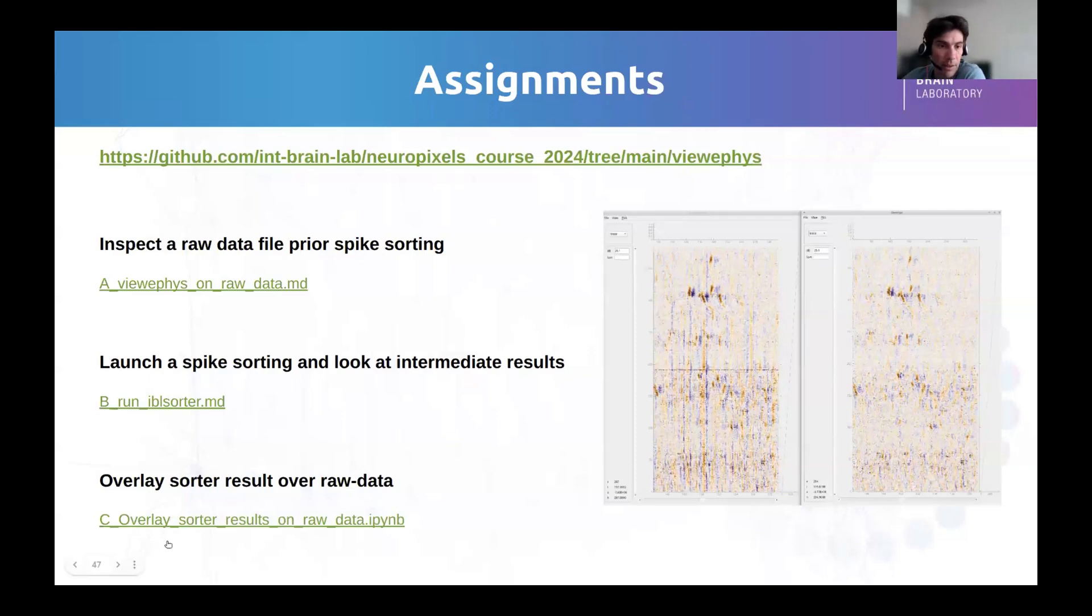The last thing is how to overlay the sorter results over the raw data. It means that here, we're going to get the spike sorting outputs, we're going to get the raw data, and we're going to paste the spikes that we detected with the spike sorter over the raw data.